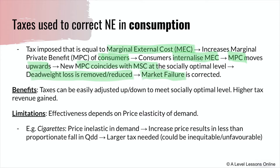Taxes can be easily adjusted up and down to meet the socially optimal level, and they can also generate higher tax revenue which can be used to finance other sectors of the economy — something beneficial to a government. However, their effectiveness depends on the price elasticity of demand (PED). Looking at cigarettes, for example, they are usually price inelastic in demand, meaning an increase in price results in a less than proportional fall in quantity demanded. So you may require a larger tax in order to bring the level of consumption down significantly.